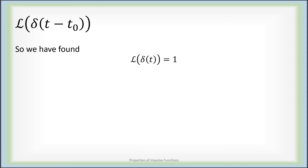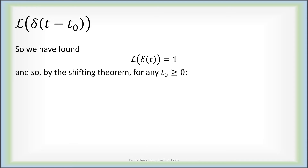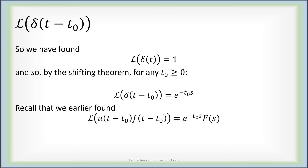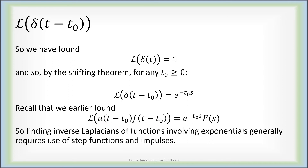The Laplace transform of the base impulse function is 1. By the shifting theorem, for any t0 greater than or equal to 0, the Laplace transform of an impulse at time t0 is e to the minus t0s. Recall our second shifting theorem for step functions: taking the inverse Laplace transform of an exponential times something recognized gives a step function times something recognized, but the inverse Laplace transform of just an exponential times 1 gives an impulse function.